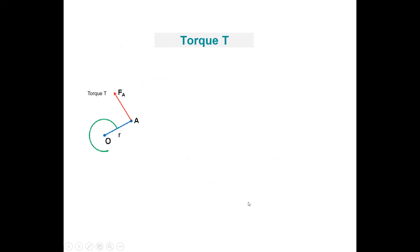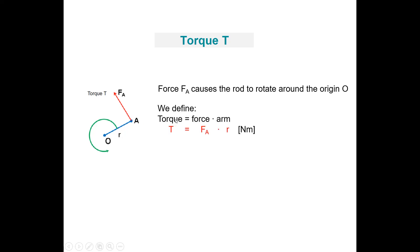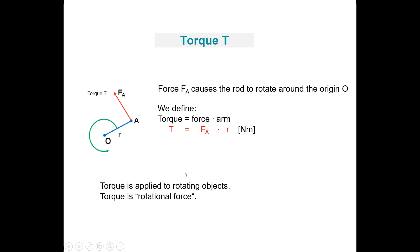Now let's discuss torque. Suppose we have a rod and a force F acting on that rod. That force F causes the rod to rotate around the origin. We define the torque as the force times the arm, so torque equals force F times arm r. The unit of torque is newton meter. Torque is always applied to rotating objects and is a so-called rotational force.